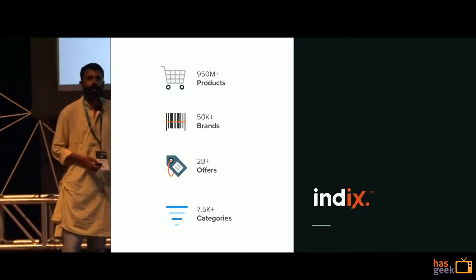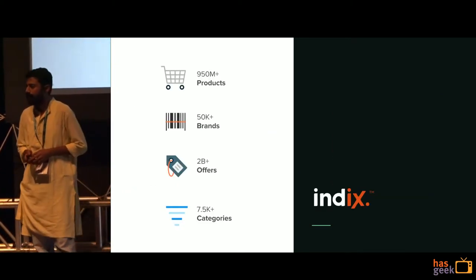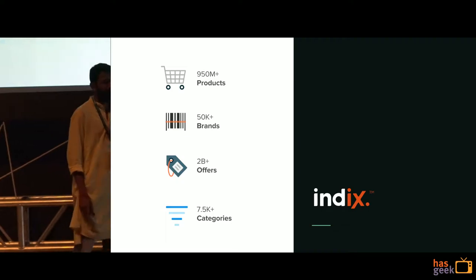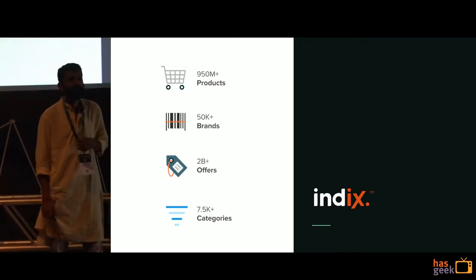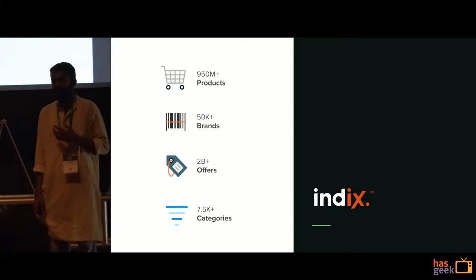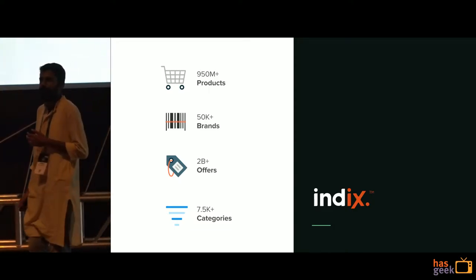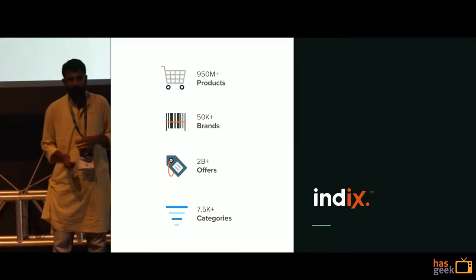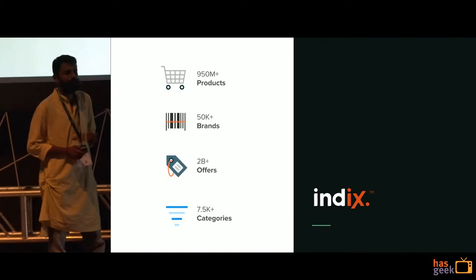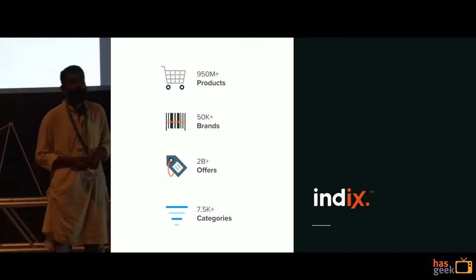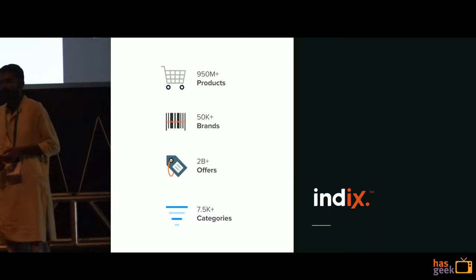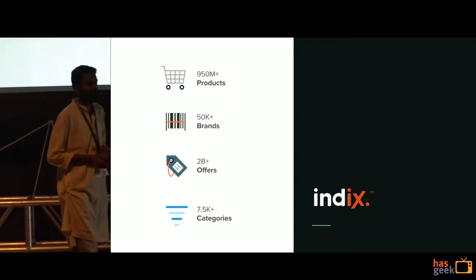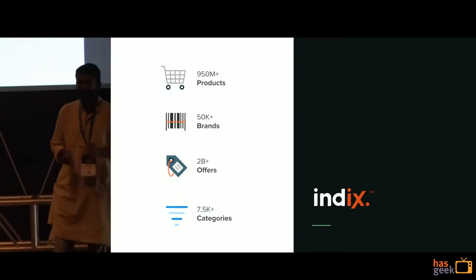If you have to put in context what Indyx does — Indyx deals with product information, collecting it, structuring it and providing it to end users. We crawl the web for product information, e-commerce stores and other affiliate information about products, structure them and store it in our database. At a high level, we have anywhere close to 900 billion to a billion product records, close to 2 billion offers, spanning across 50,000 plus brands and 7,000 plus categories. That's the scale of problem that we deal with.